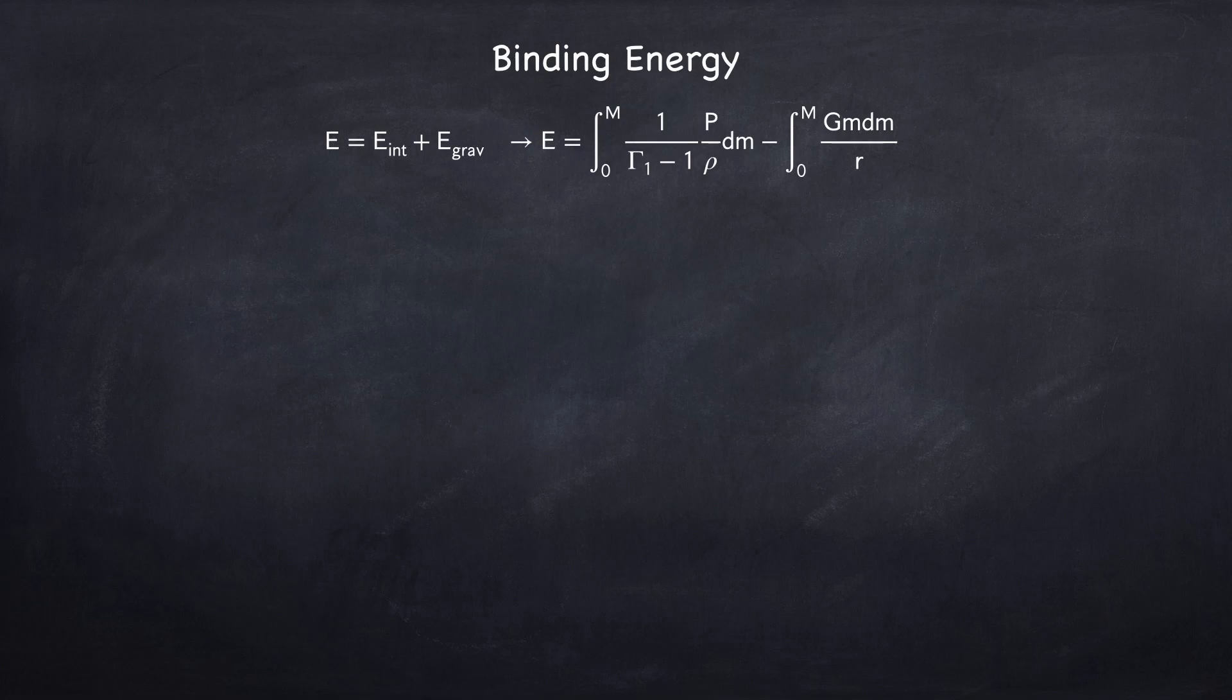And we've already derived in chapter 3 that the general form of the internal energy per unit mass is p over rho divided by gamma 1 minus 1. If gamma 1 is constant, we can pull it out of the internal energy integral and just integrate p over rho over the mass. Gamma 1 is five-thirds, so the factor out in front of the integral will be three halves.